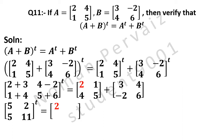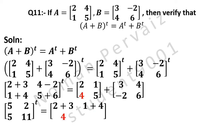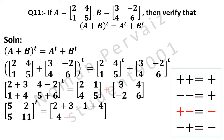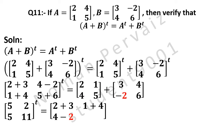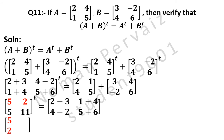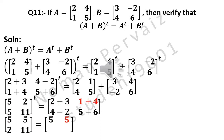Is equal to: 2 comes from the first matrix plus 3 from the second matrix; 1 comes from the first matrix plus 4 from the second matrix; 4 comes from the first matrix, plus minus 2 gives minus 2; 5 comes from the first matrix plus 6 from the second matrix. Now taking transpose: the first row is changed to the first column, so 5 and 2 are written into the first column; the second row is changed to the second column, so 5 and 11 are written into the second column. Is equal to: 2 plus 3 is 5, 1 plus 4 is 5, 4 minus 2 is 2, and 5 plus 6 is 11.